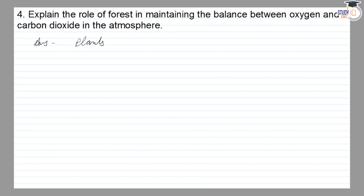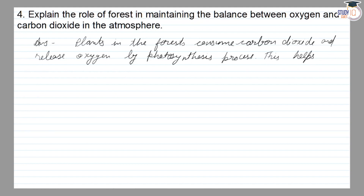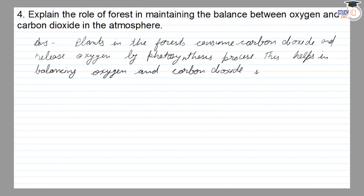Plants in the forest consume carbon dioxide and release oxygen by photosynthesis. This helps in balancing oxygen and carbon dioxide in the atmosphere.